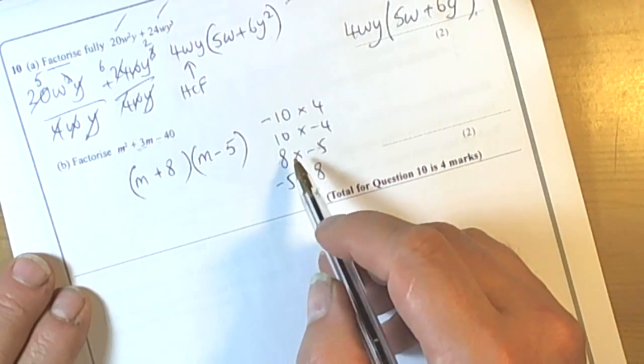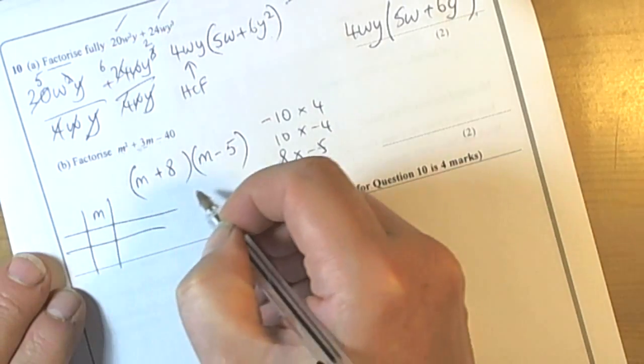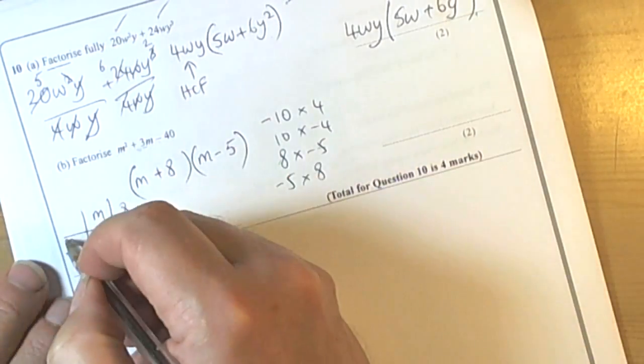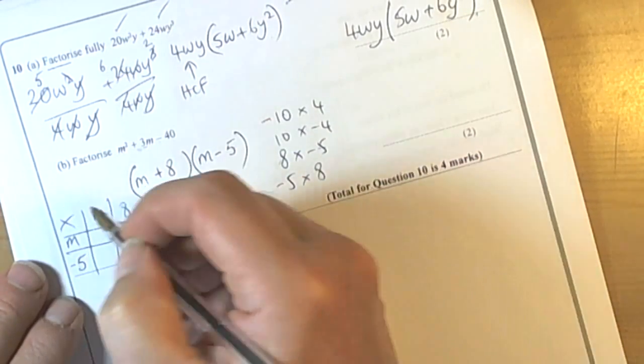We should check it, of course. So classic way of checking would be to either use the grid method or FOIL if you like using FOIL. So it's a times in grid.